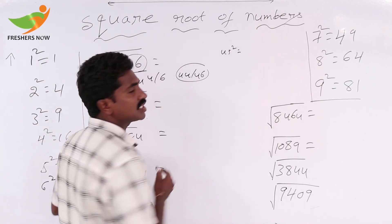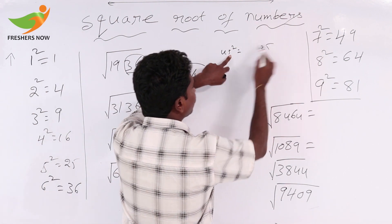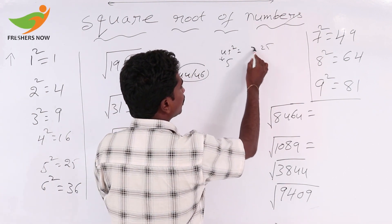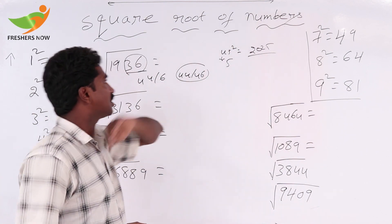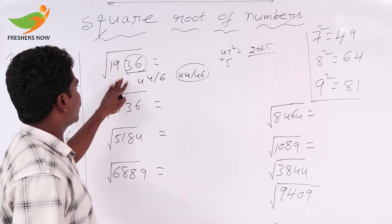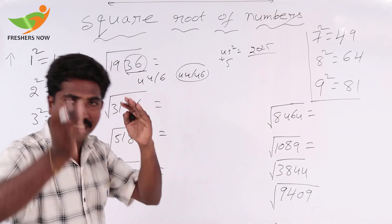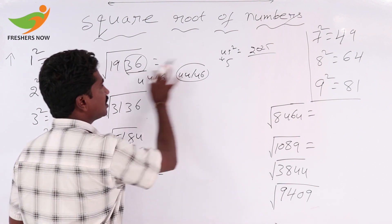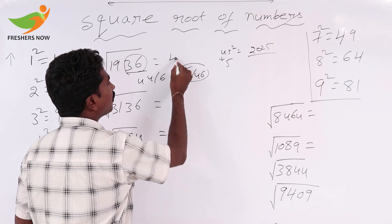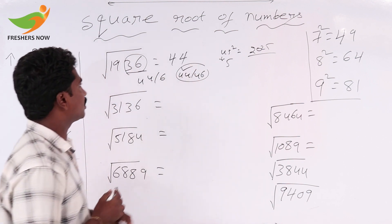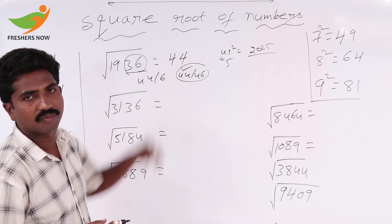We know the square of numbers ending with 5. 45 squared: 5 squared is 25, and 4 times the next number 5 gives 20. So 45 squared is 2025. Since 1936 is less than 2025, we have to take 44. So the square root of 1936 is 44.